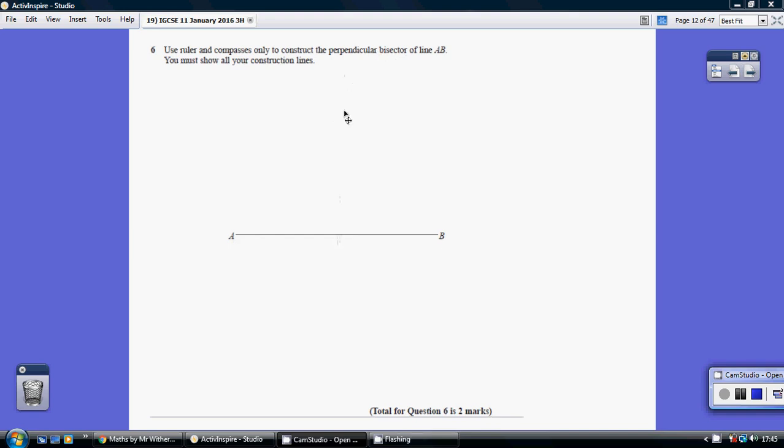So we're basically looking for a straight line down here at 90 degrees that's halfway along, but we must use ruler and compasses.